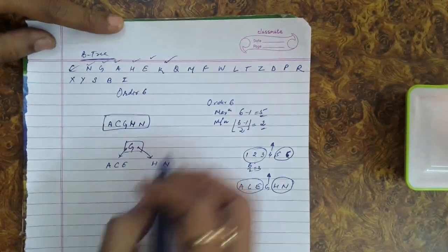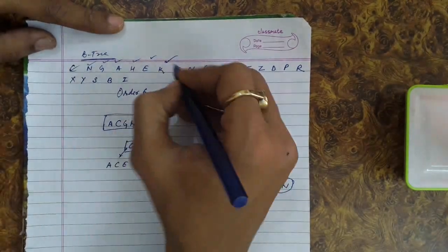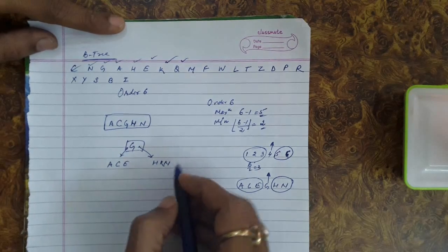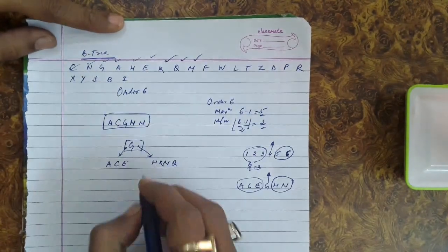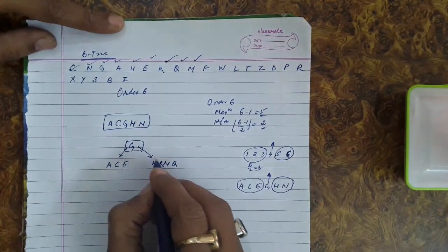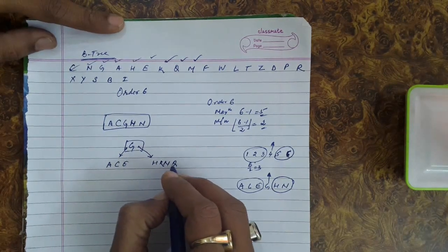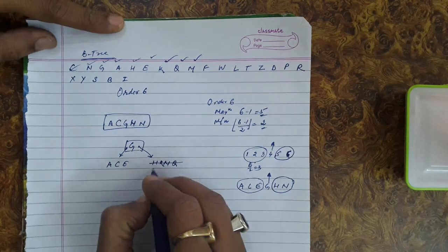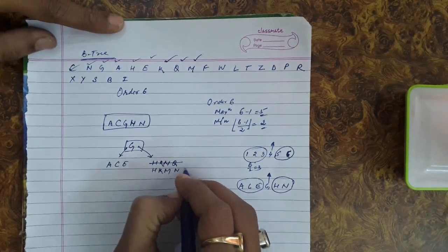Now let's insert K. K is greater than G, so it will come on the right side node. Next, M is also greater than G, so it goes to that node as well. Then Q is inserted. The right node now contains H, K, M, N, and Q.